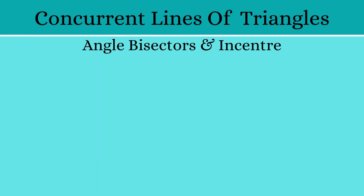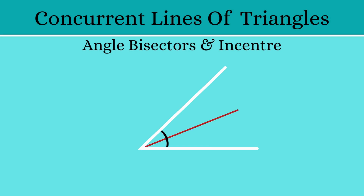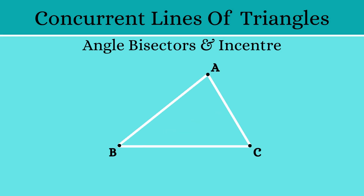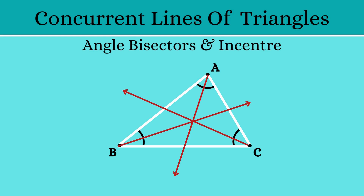Now we move on to angle bisectors. An angle bisector is a line which divides an angle into two equal halves. Let's consider triangle ABC. It has three angles: angle A, angle B and angle C. That means we would have three angle bisectors. Let's learn how to draw an angle bisector.